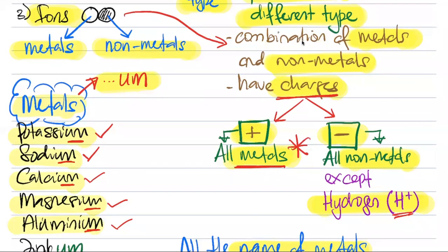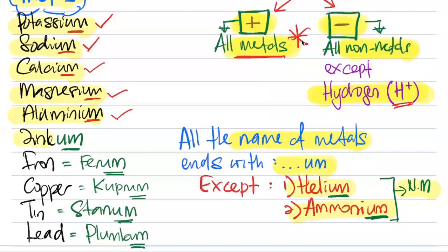But there are certain names which don't have um. For example like this, we have got zinc, we have got iron, we have got copper, tin, and also lead.